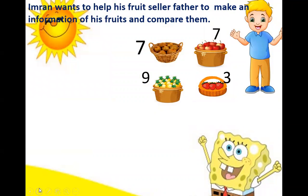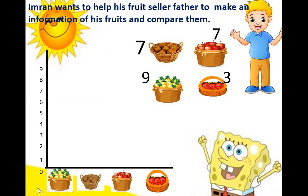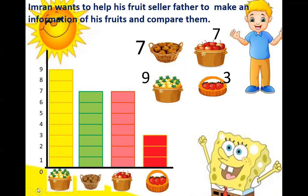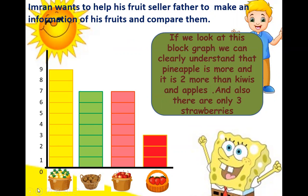Now, Imran wants to help his fruit seller father to make information about his fruits and compare them. We are going to draw the block graph. On the x-axis, we will give the items: pineapple, kiwi, apple and strawberry. And the y-axis will show numbers from 0 to 9. Pineapples — there are 9, so there will be 9 blocks. Kiwis are 7, apples are 7 and strawberry is 3. Looking at this block graph, we can clearly understand that pineapple is more — it is 2 more than kiwis and apples. And there are only 3 strawberries.